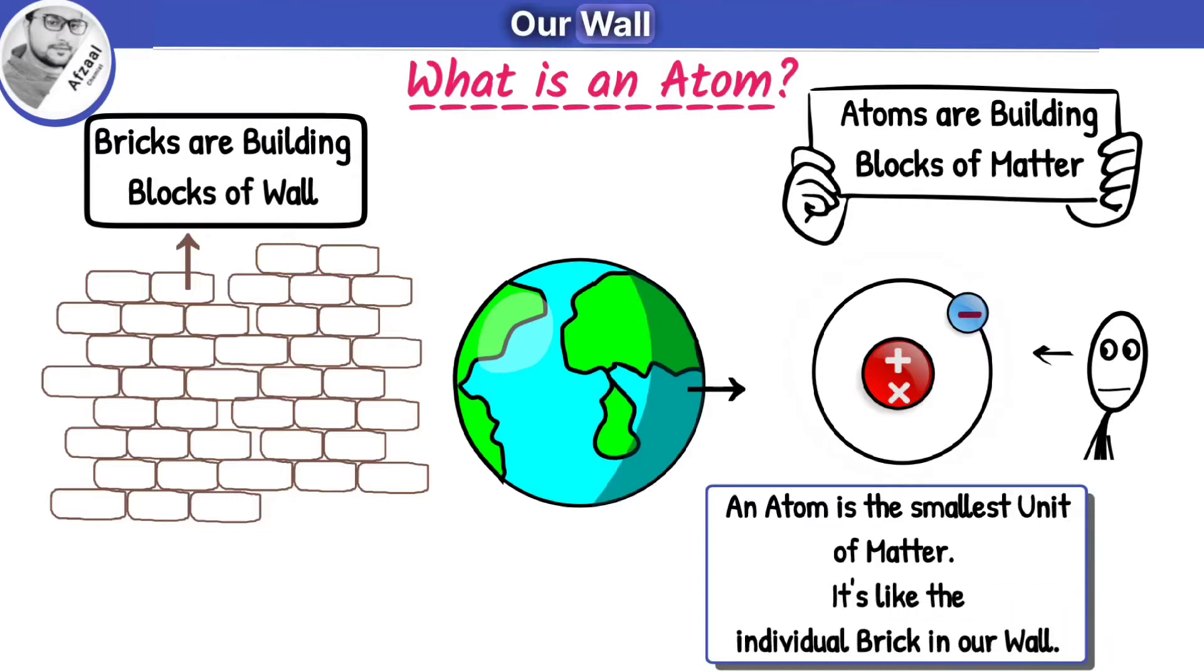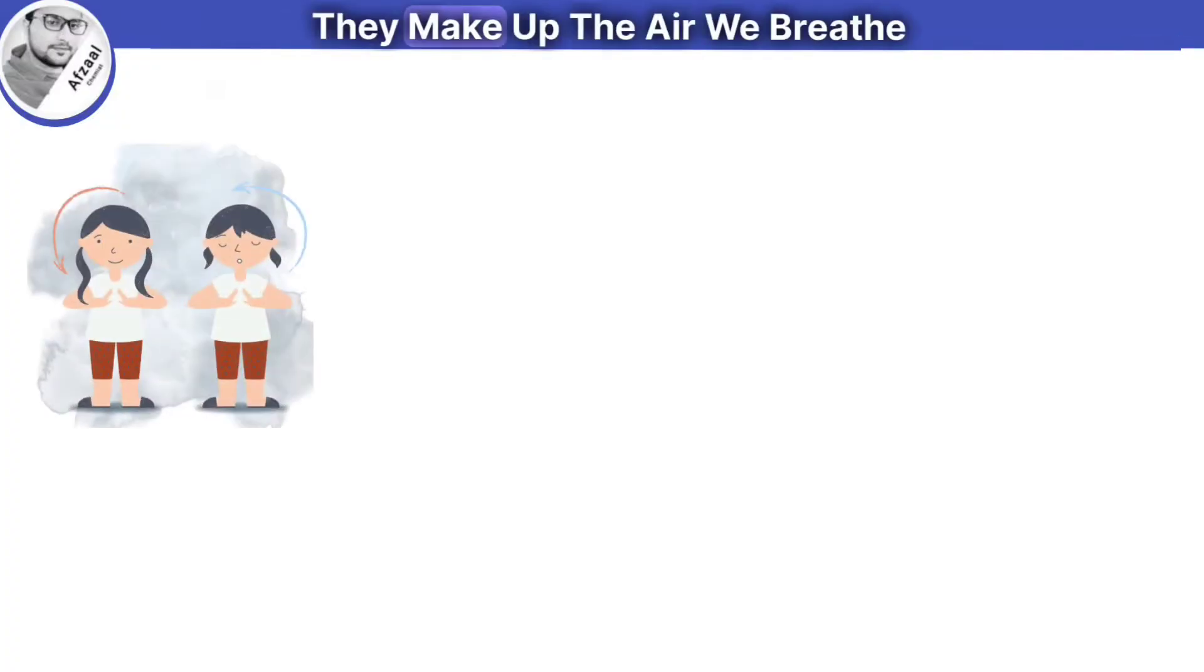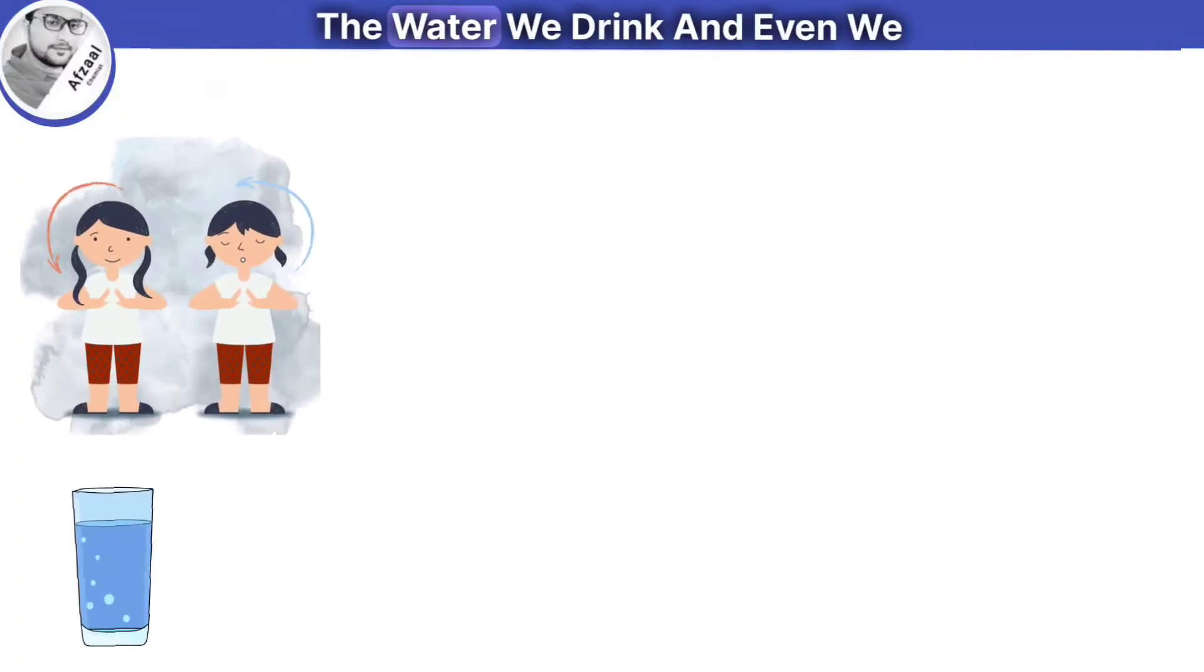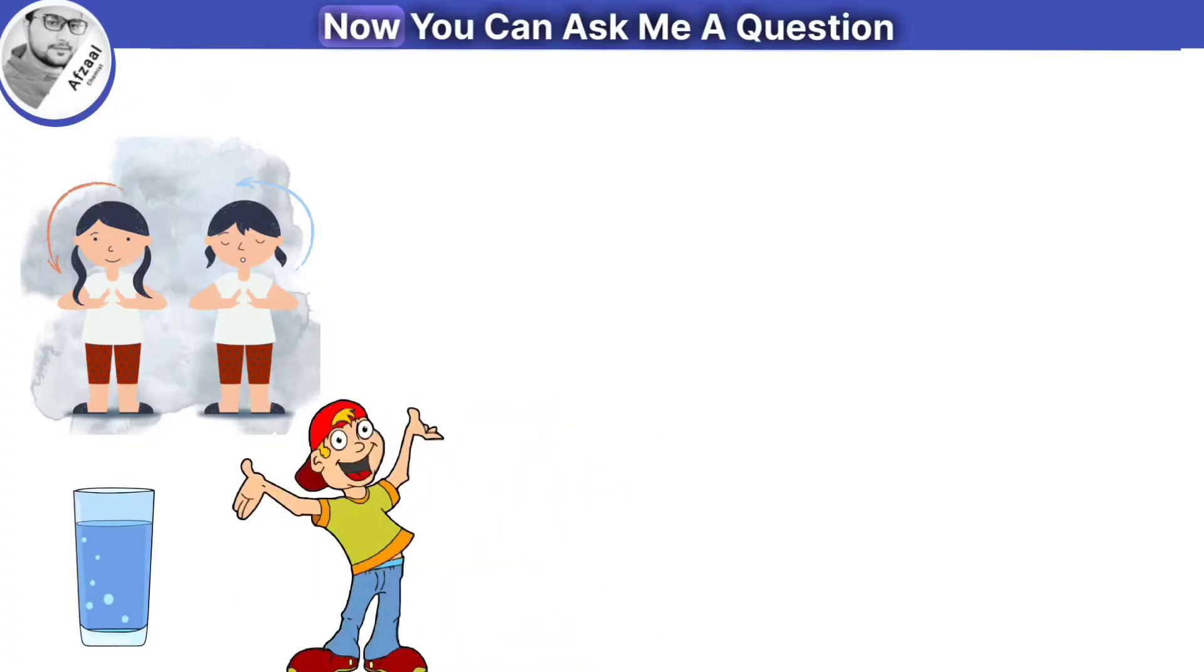So an atom is the smallest unit of matter. It's like the individual brick in our wall. Atoms are the building blocks of everything around us. They make up the air we breathe, the water we drink, and even we are all made up of atoms.